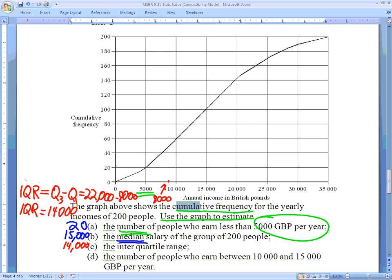So we start at 10,000. I follow that up, and we did this one—it was about 60 people. So we've got about 60 people who earned 10,000 or less, or 10,000 pounds I'm sorry, or less. And then we do the 15,000. We follow that up again until we hit the graph, and it hits the graph right around 100.